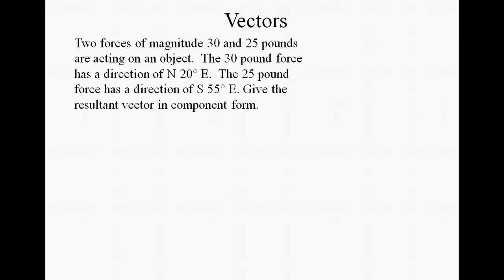Okay, let's suppose that we had two forces. One with a magnitude of 30 and the other one with a magnitude of 25 acting on the same object. We want to find the resultant vector of these two vectors. In other words, we want to find the sum of the two vectors that we have involved here. So we have a 30 pound force with a direction of north 20 degrees east and a 25 pound force with a direction of south 55 degrees east. So the first thing that we have to do in order to add the two vectors together is to first write them in their component form.